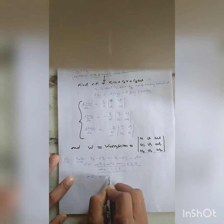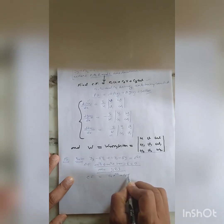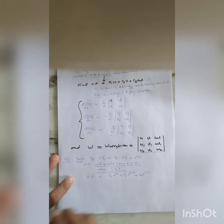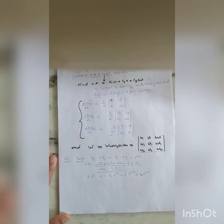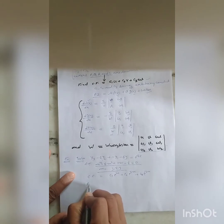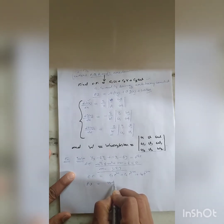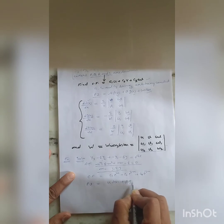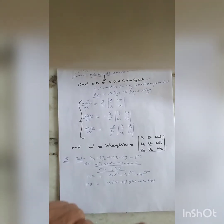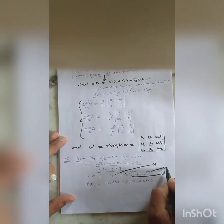According to the roots, we arrange the complementary function: CF = c1·e^x + c2·e^(2x) + c3·e^(3x). Now we need the particular integral using the variation of parameter method. We consider the particular integral as u·f(x) + v·g(x) + w·h(x), where u = e^x, v = e^(2x), and w = e^(3x) are the linearly independent solutions.